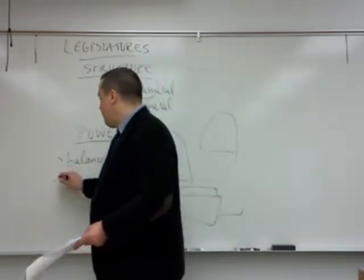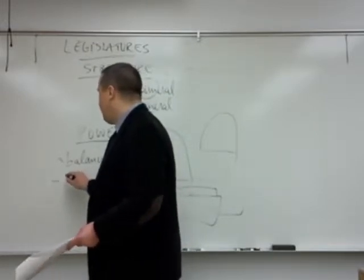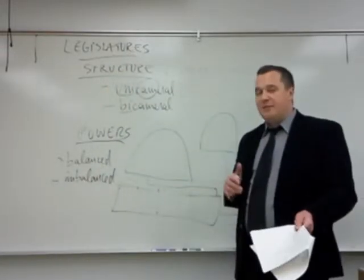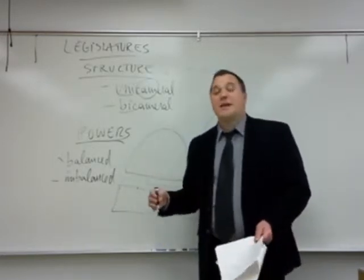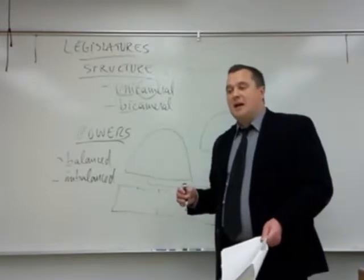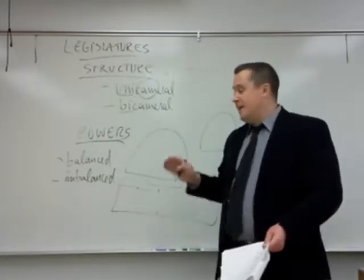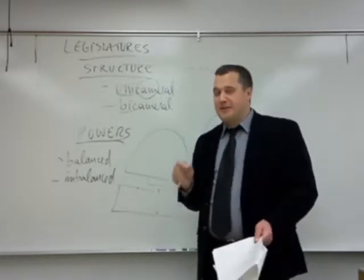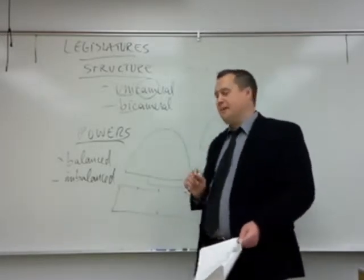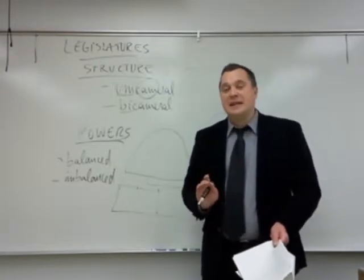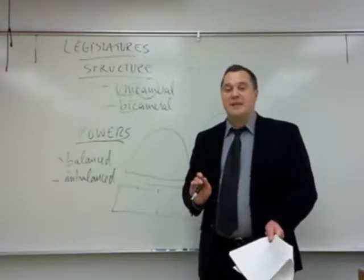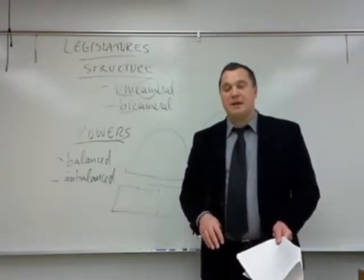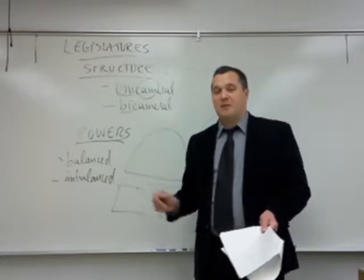In the US, both houses need to pass a bill in identical form, and no house has a tool to defeat the veto of the other house — so they're equal. This is balanced bicameralism. Then there is imbalanced or unequal bicameralism. Of our four case studies, the most balanced is the US, then Germany, then France's Senate, and last is the UK's House of Lords — the UK probably has the most imbalanced legislature, because the House of Commons is much more powerful than the House of Lords.